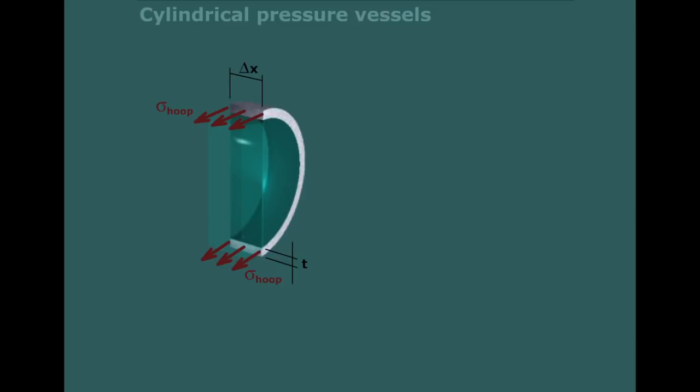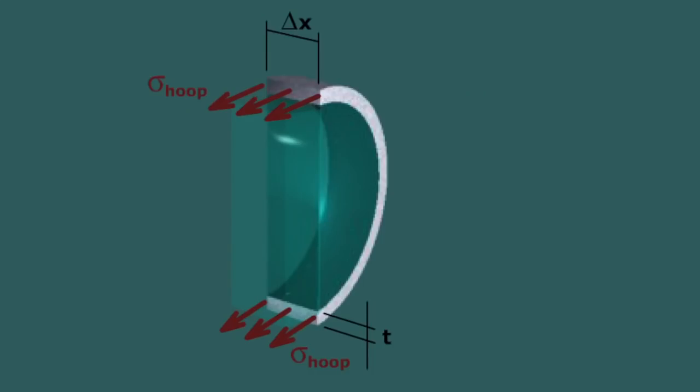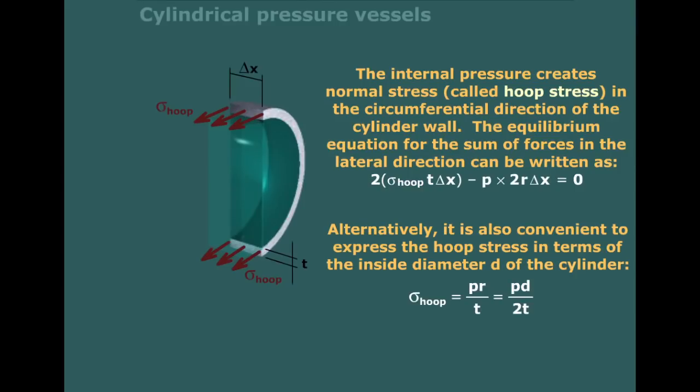This force should be equalized with the force developed on the wall of that vessel. The resultant force from the hoop stress is hoop stress multiplied by the area. We have two small rectangles — the rectangle on top has area delta x times t, and the same on the bottom, giving 2t delta x times sigma hoop. Setting these two resultant forces equal to each other, we determine that sigma hoop equals pr over t, or pd over 2t.